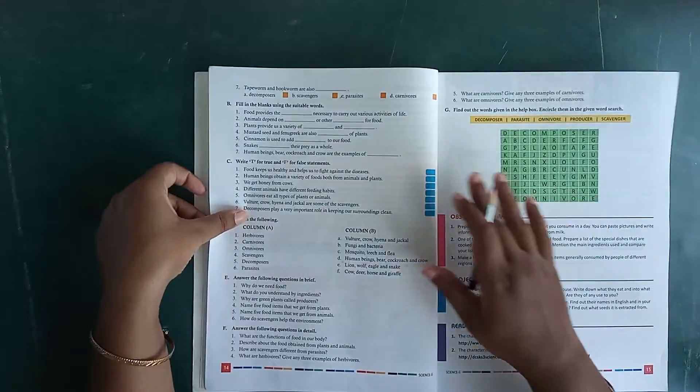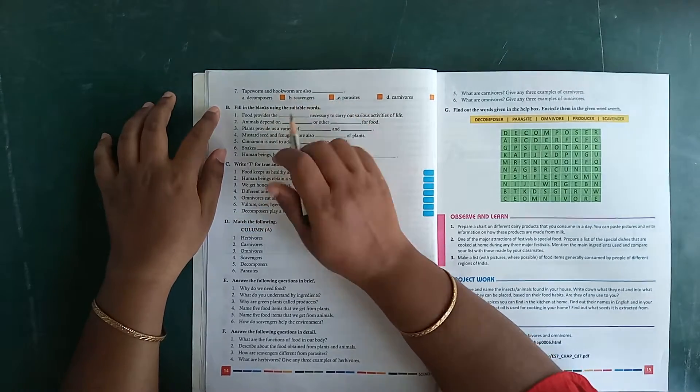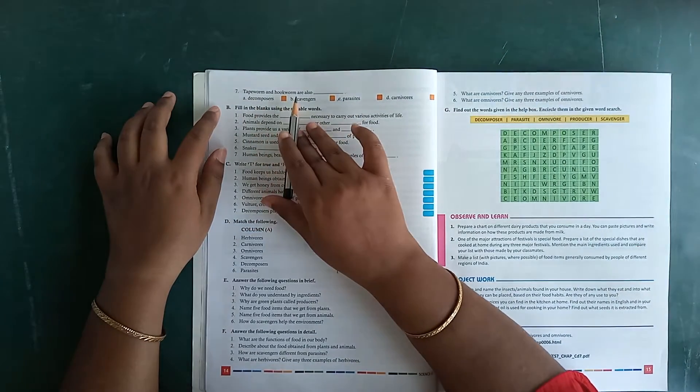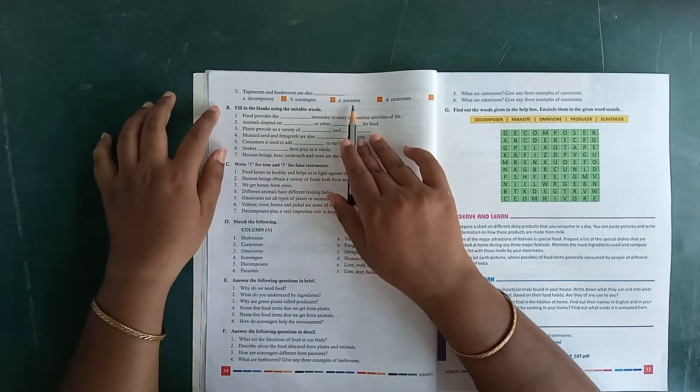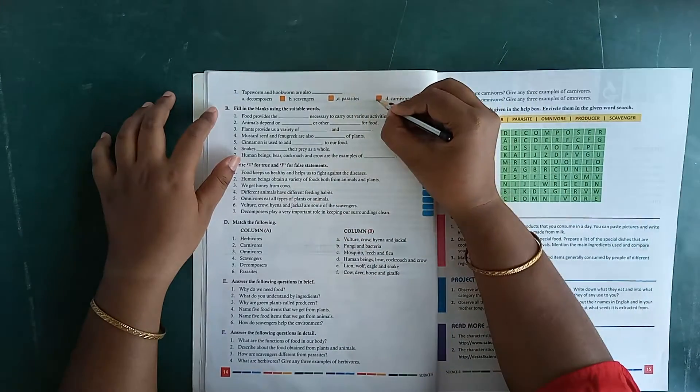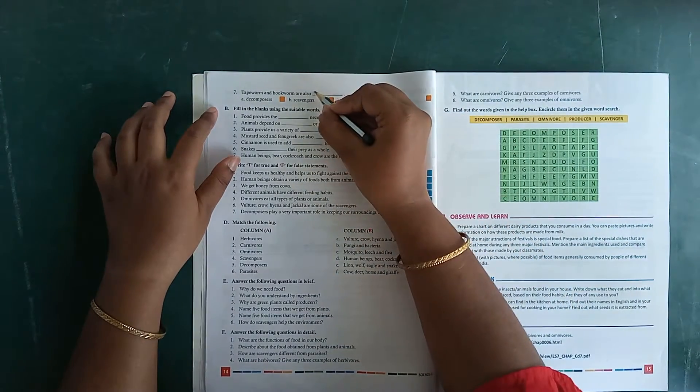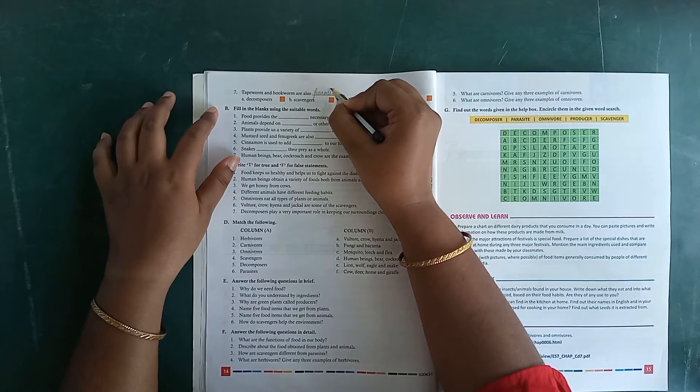Then, tapeworm and hookworm are also dash. Decomposers, scavengers, parasites, or carnivores. It's C, parasites. Tick it here and write down here P-A-R-A-S-I-T-E-S, parasites.